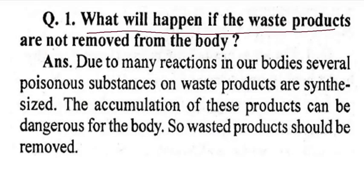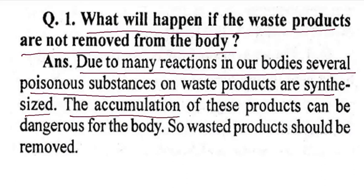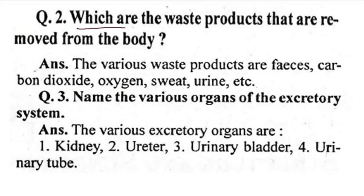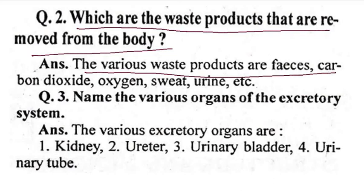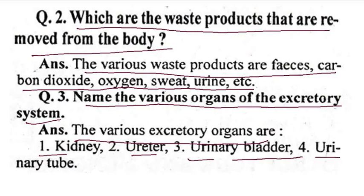What will happen if the waste products are not removed from the body? Due to many reactions in our body, several poisonous substances and waste products are synthesized. The accumulation of these products can be dangerous for the body, so waste products should be removed. The various waste products removed from the body include carbon dioxide, urine, sweat, etc. The various excretory organs are the kidney, ureter, urinary bladder, and urinary tube.